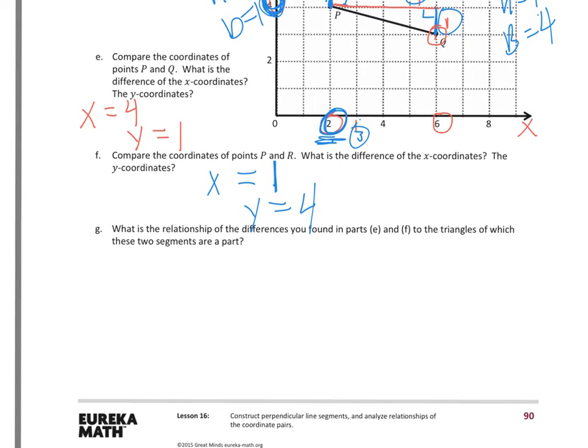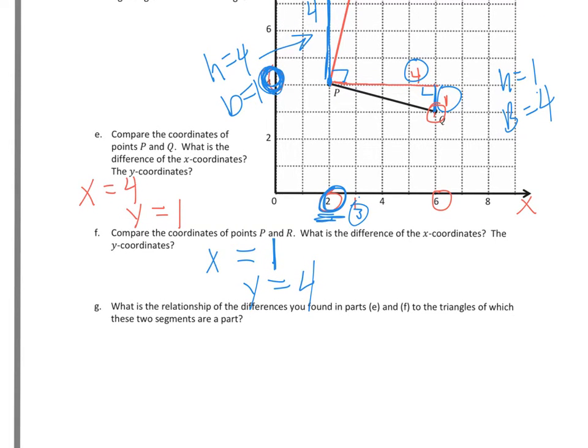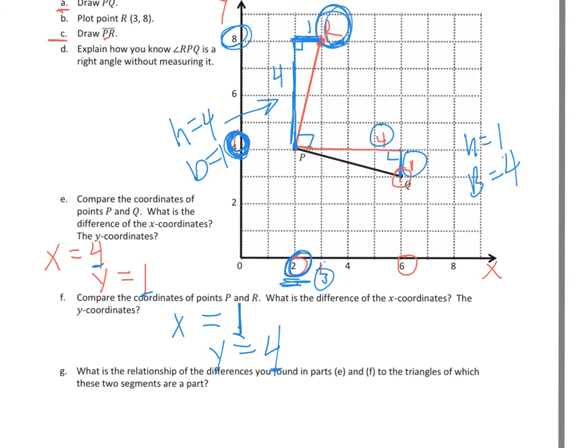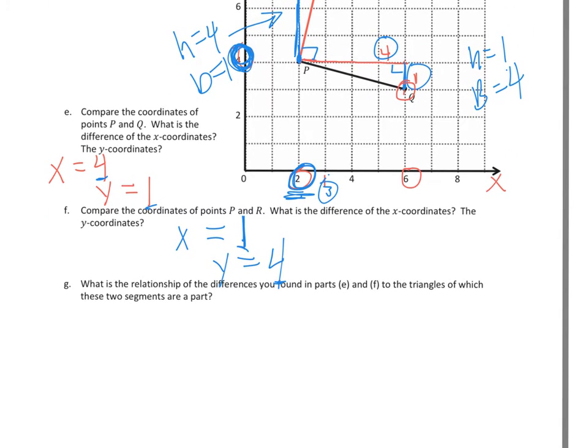Now G says, what is the relationship of the differences you found in parts E and F to the triangles of which these two segments are apart? So I notice 1 and 4 and 4 and 1. That's my differences. 4 and 1, 1 and 4. They look very familiar to the measurements of the base and the height for my right rectangle. So you're gonna be talking a little bit about that for your relationship there, that you're talking with for the differences.